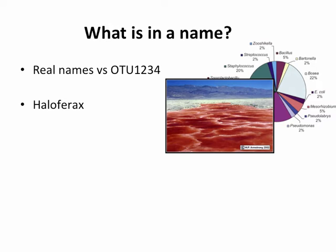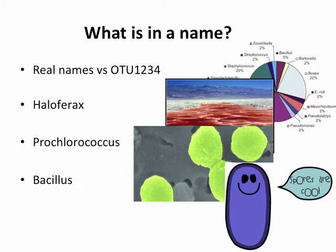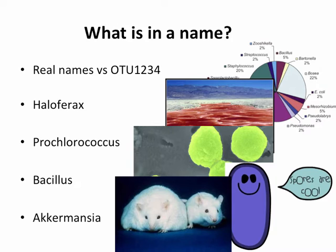If you're into extremophiles, you'd think Halobacterax — those must be cool archaea that live in really salty environments. Or if you saw Pleurococcus pop up you'd think, what are they doing in the gut? They must be photosynthetic. If you saw Bacillus you might think of spores. New associations keep coming out too — in obesity microbiome research, Akkermansia is a genus that keeps popping up as potentially significant. All these names have things associated with them from our research.